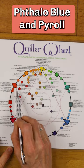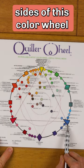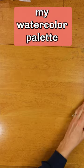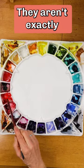Here's an example. Phthalo blue and pyrrole red are on opposite sides of this color wheel. Here's my watercolor palette. They aren't exactly in the right position.